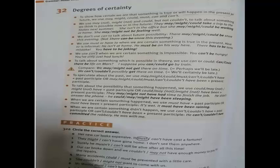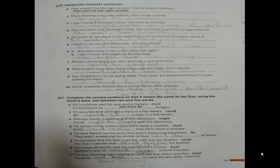Exercise 32A: circle the correct answer. Number one: 'They might have gone home — I don't see them anywhere.' Answer: 'They might have gone home.' Number two: 'Surely he can't still be alive after all this time.' For 32B, correct the incorrect sentence. 'She's wearing a nurse's uniform. She can be a nurse.' The answer is 'she must be a nurse' because we are certain that she is a nurse.